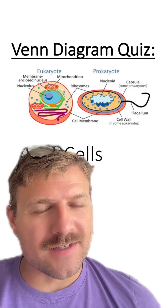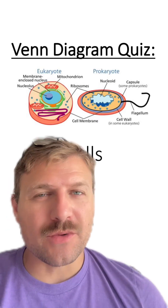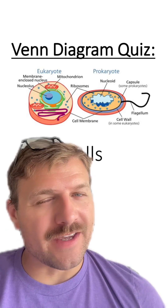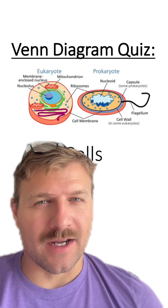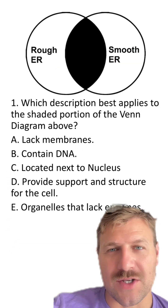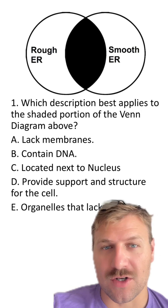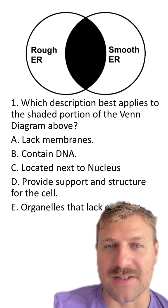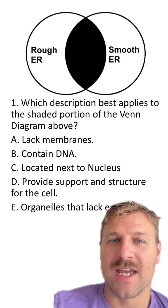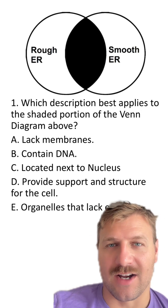Can you answer these questions about cells? All three questions are going to involve a Venn diagram. Each of these three questions are going to have the same question: which description best applies to the shaded portion in the Venn diagram above?